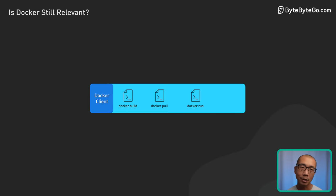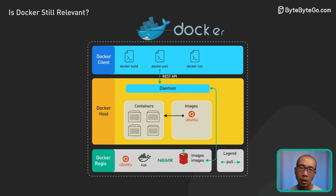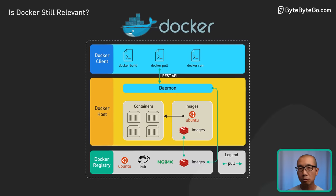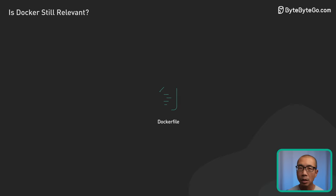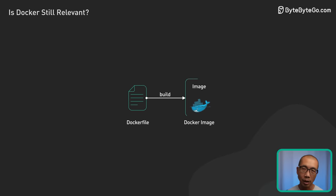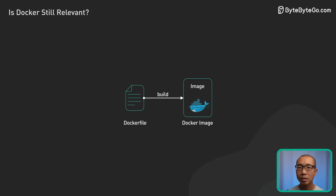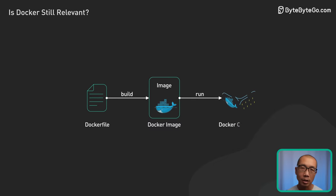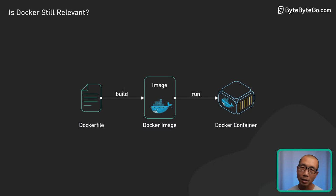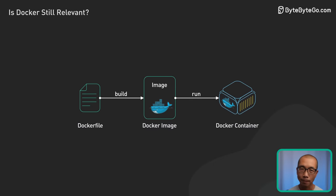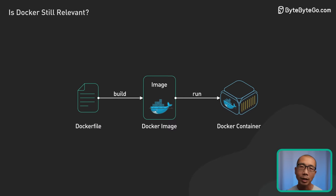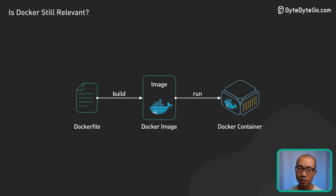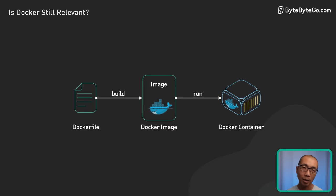Now let's move on to key Docker commands. When you run Docker pull, images download from registries. Docker build uses a Dockerfile to build an image — it adheres to OCI standards for image formats, making it compatible across different runtimes. Docker run starts a container from an image and is managed by the Docker daemon, where Containerd and CRI-O can serve as underlying runtimes, thanks to OCI compliance.